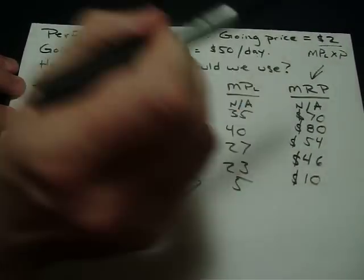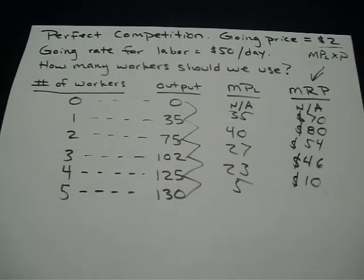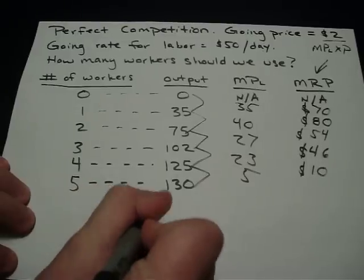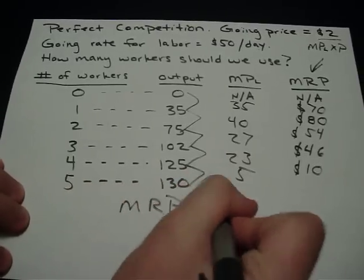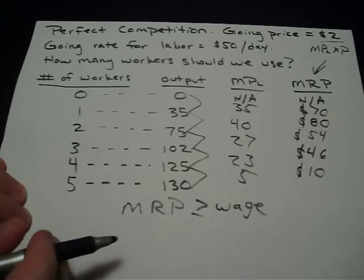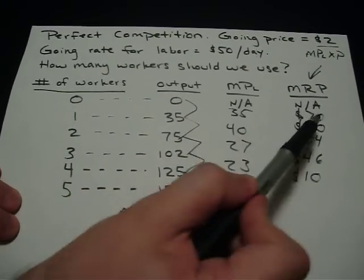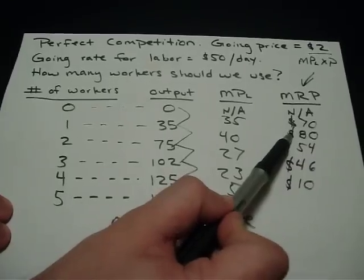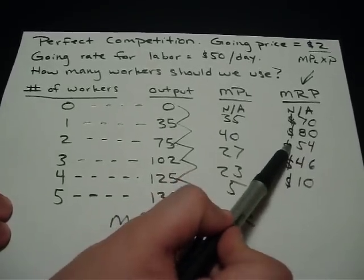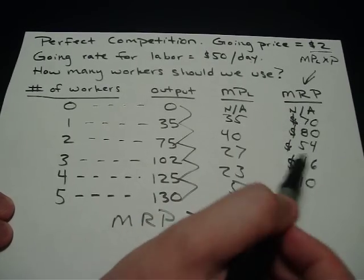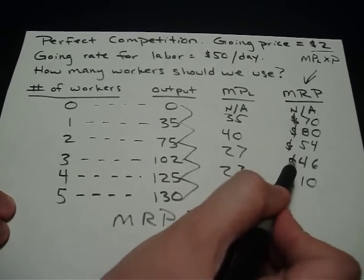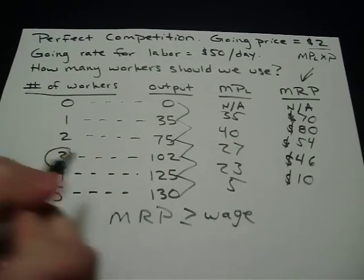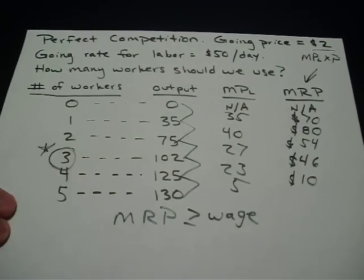So how many workers should we use? If the going rate for labor is $50 a day, we use workers as long as the MRP is greater than or equal to the wage. We can pay $50 and get $70 — use that worker. $80 for another $50 — use that worker. $54 for another $50 — use that worker. But no one will pay $50 for a worker who only returns $46. So we are going to use three workers total.